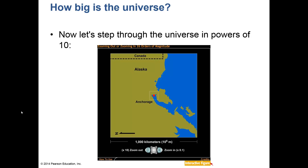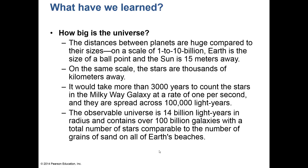There's a famous video called Powers of 10 that shows how big the universe is in steps of powers of 10, zooming out by a factor of 10 each time. The distances between planets are huge compared to their sizes. On a scale of 1 to 10 billion, Earth is the size of a ballpoint pen and the Sun is 15 meters away. It would take more than 3,000 years to count the stars in the Milky Way at one per second. The observable universe is 14 billion light years in radius and contains over 100 billion galaxies with 200 billion stars each.